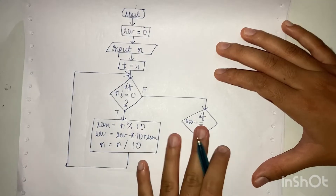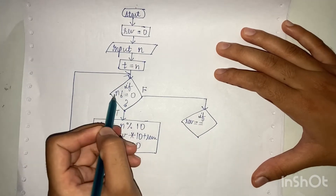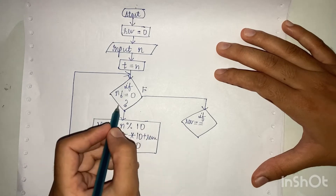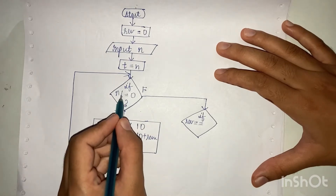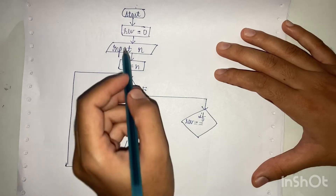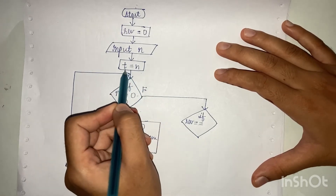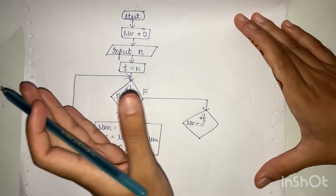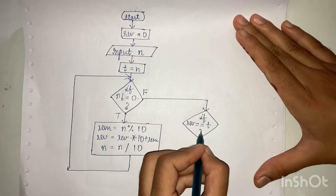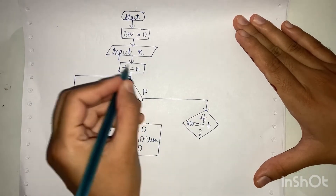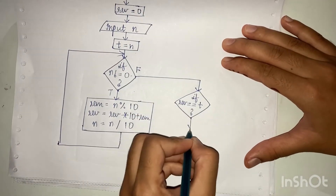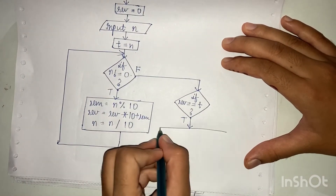After coming out of the loop, the original number n is now 0 because the loop condition becomes false when n equals 0. So we will not compare with n — we will compare with the temporary variable which was set equal to n at the start. That temporary variable p holds the original value of n.